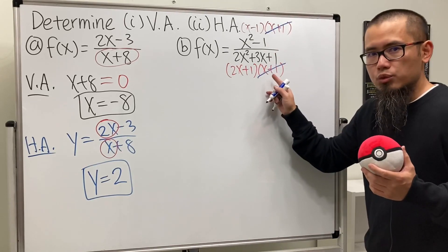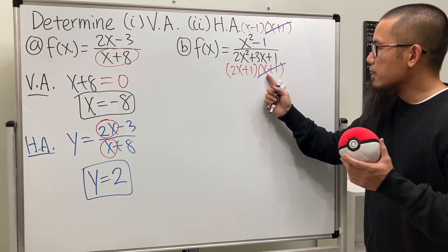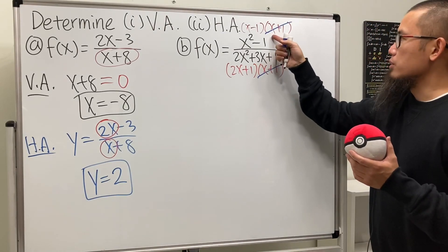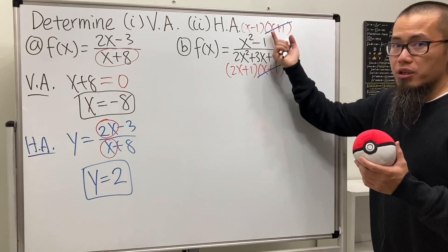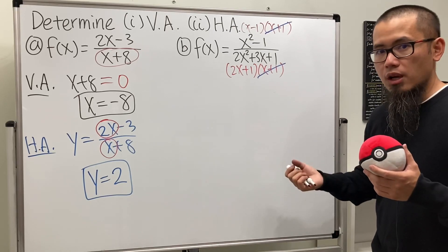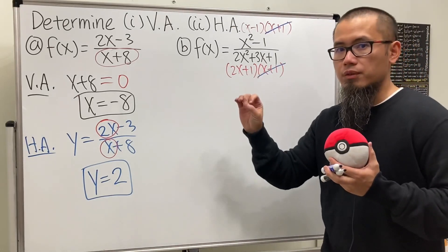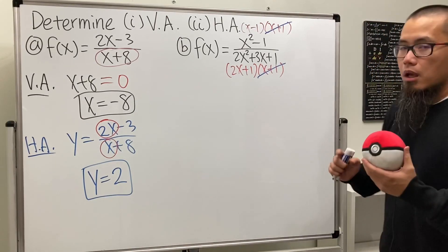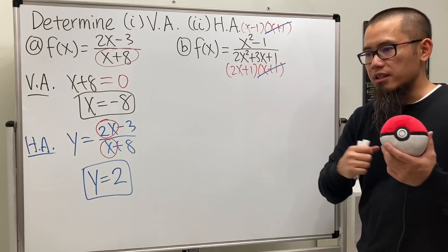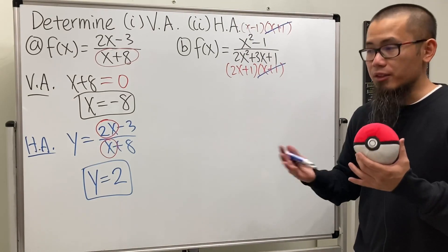If x + 1 = 0, that means x = −1, but when x = −1 the top is also zero, giving 0/0. That does not give you a vertical asymptote — it only gives you an open circle on the curve. For the domain you look at the original denominator and make it not equal zero, but for the vertical asymptote you must work with the reduced function.